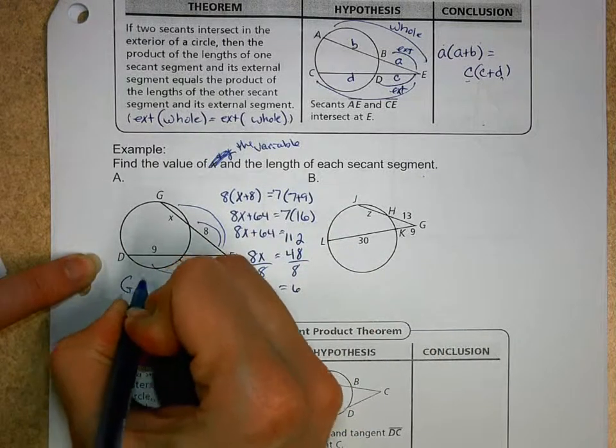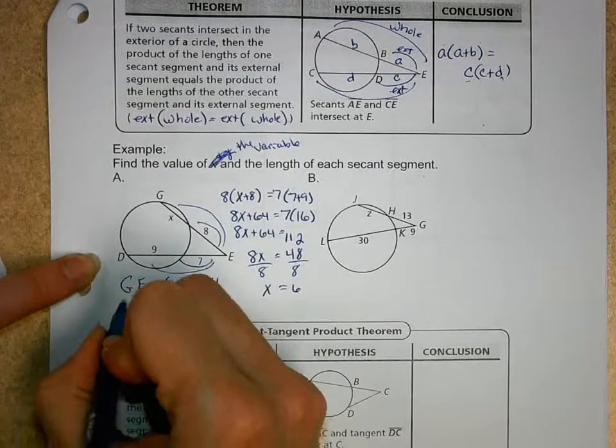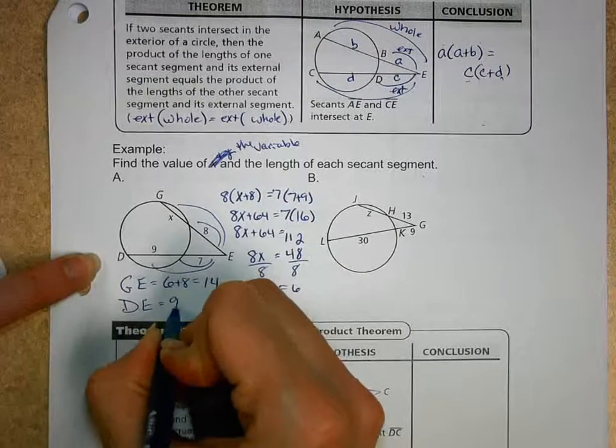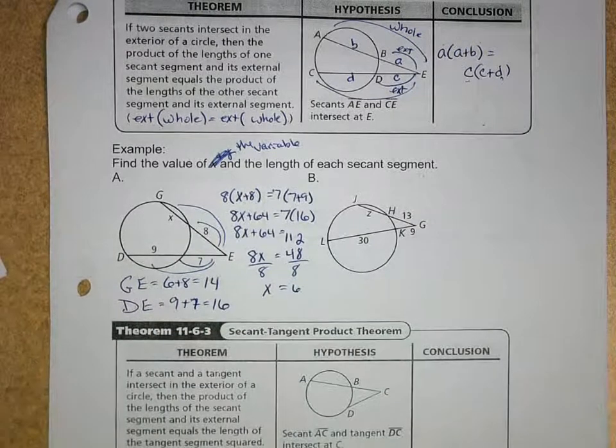So here on that, the length of segment GE is 6 plus 8, which equals 14. And we have the length of segment DE, which is just 9 plus 7, which we already knew earlier, is 16.